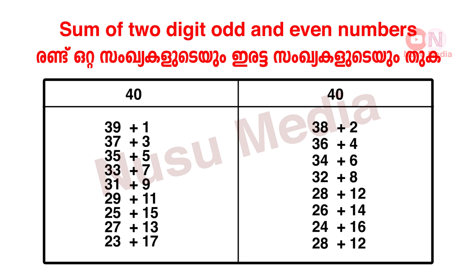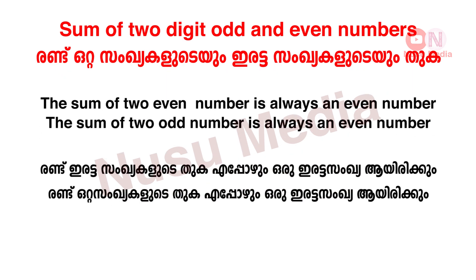Now let's look at even number pairs that also sum to 40: 32 plus 8, 34 plus 6, 36 plus 4, 38 plus 2, 22 plus 18, 24 plus 16, 26 plus 14, 28 plus 12. The sum of two even numbers is always an even number. The sum of two odd numbers is always an even number.